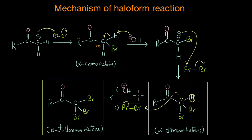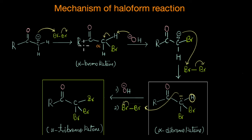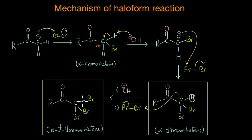This mechanism shows that the reaction is really hard to control because the product formed at the end of each deprotonation step is much more acidic than its precursor. With every successive deprotonation step we get a stronger acid, and the reaction continues until we end up with a product that has no more acidic alpha hydrogens left.